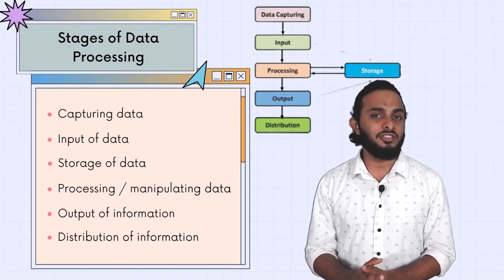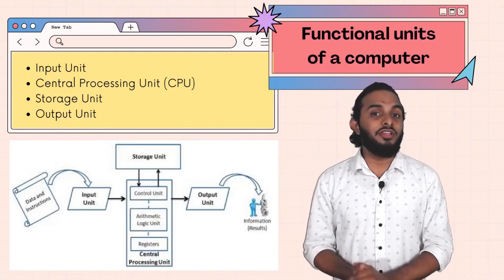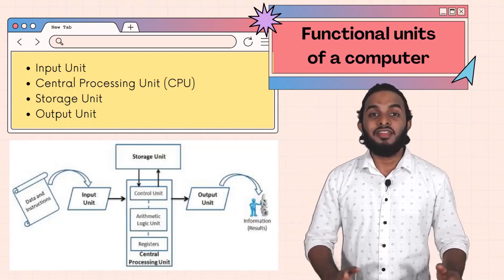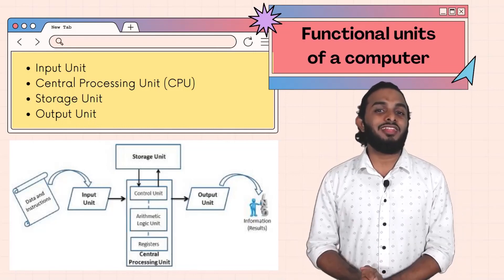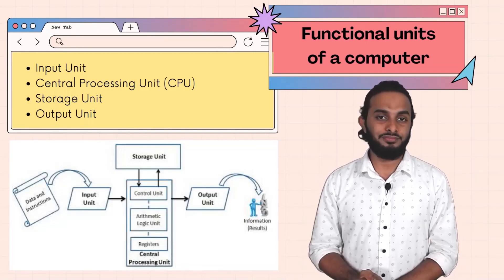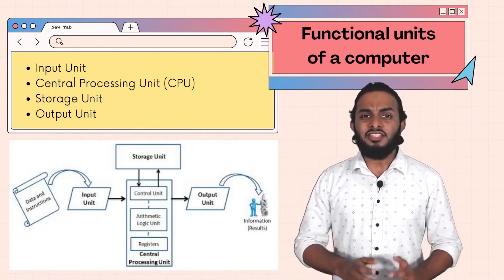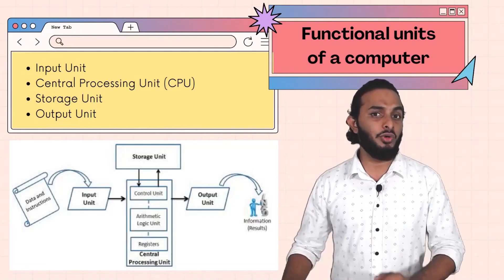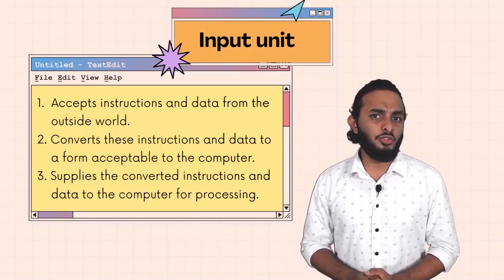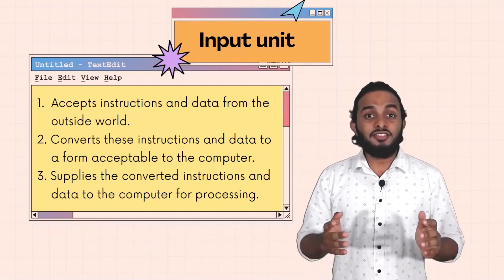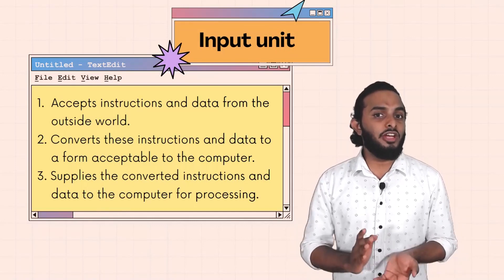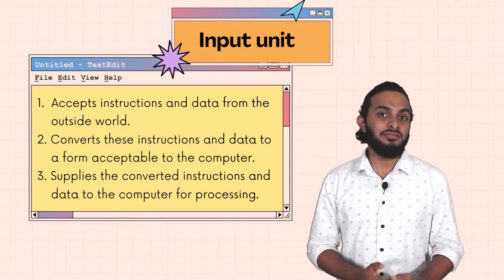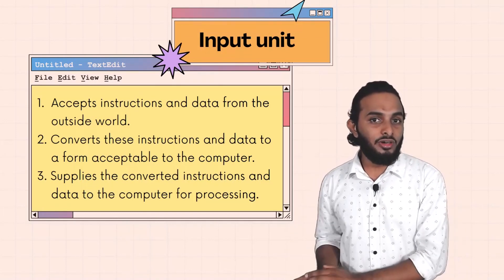So, data, information, and data processing are covered. Now, what are the functional units of the computer? The basic fundamental functional units of the computer: the input unit. We have to put data, information, and instructions into the CPU. When you put it in through input devices, it is not human readable. The data has to be converted into machine language — that is the input unit, converting human-readable format into machine language.